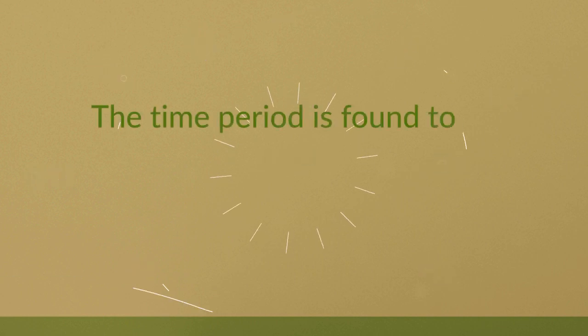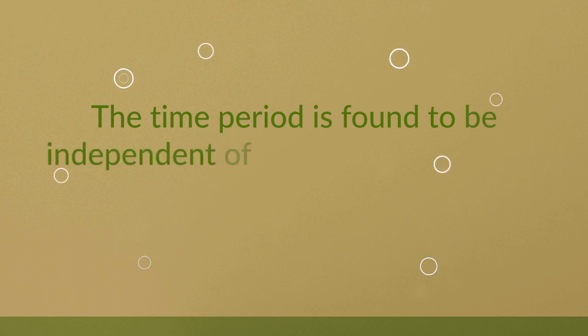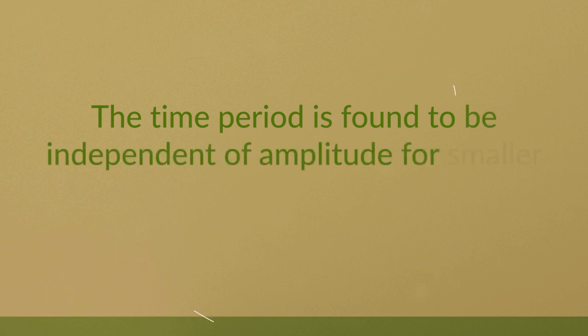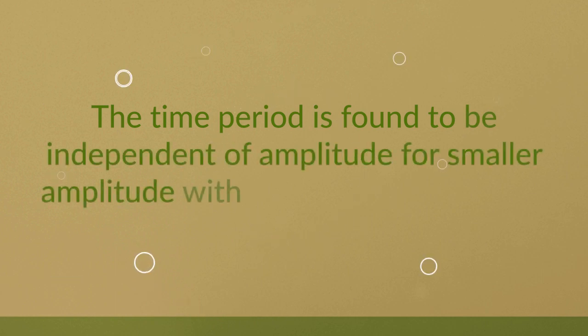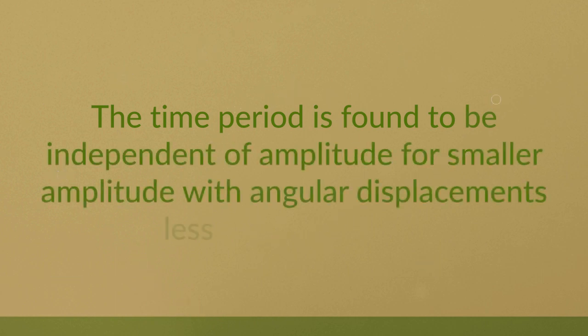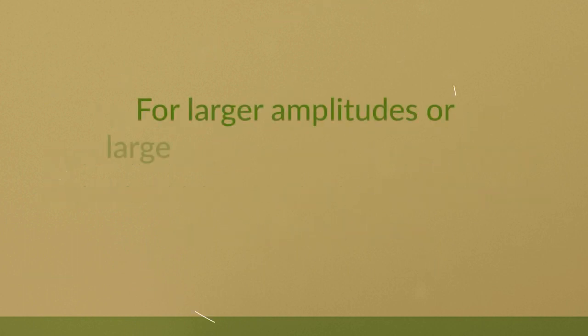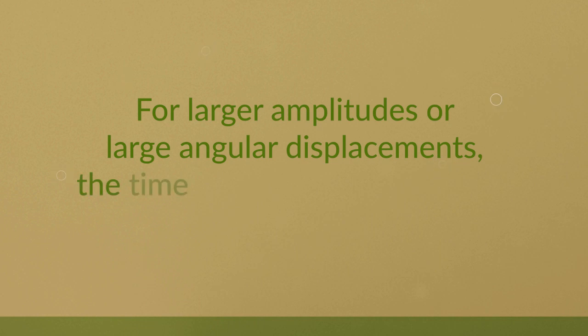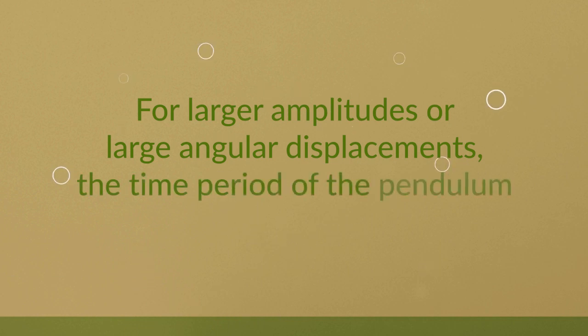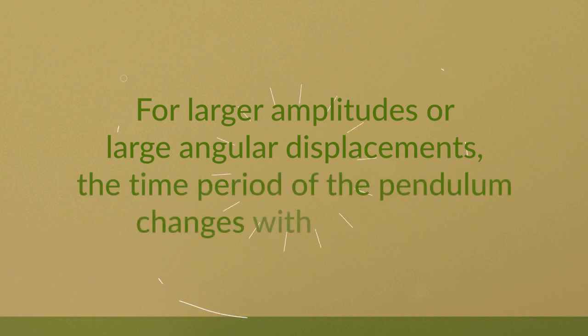Result: The time period is found to be independent of amplitude for smaller amplitudes with angular displacements less than 10°. For larger amplitudes or large angular displacements, the time period of the pendulum changes with amplitude.